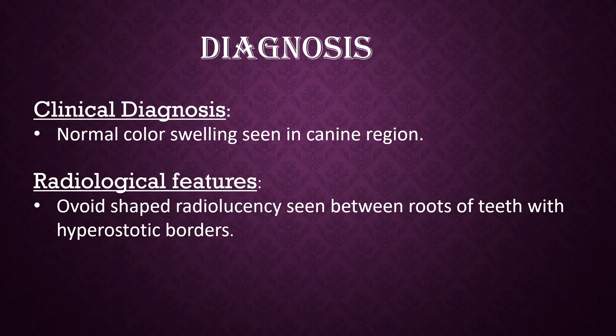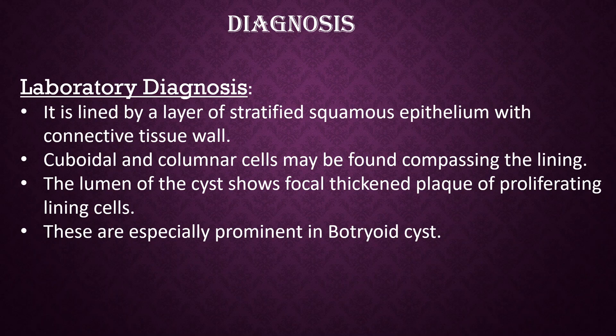Diagnosis — Clinical: Normal color swelling seen in the canine region. Radiological: A wedge-shaped radiolucency seen between roots of the teeth with hyperostatic borders. Laboratory: The cyst is lined by a layer of stratified squamous epithelium with a connective tissue wall. Cuboidal and columnar cells may be found lining the cyst. The lumen shows focal thickened plaques of proliferating lining cells, especially prominent in botryoid cysts.